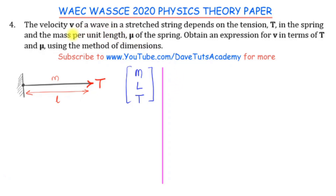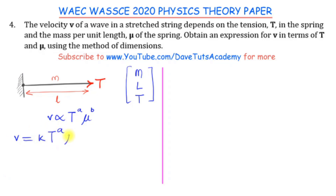Looking at the question, we are told the velocity depends on the tension and the mass per unit length. Writing that as a variation: v is proportional to the tension raised to some power a, multiplied by the mass per unit length raised to some power b. We write these as raised to some power because we don't know what the constant of proportionality will bring. So we say v equals k multiplied by T raised to power a, multiplied by mu raised to power b.